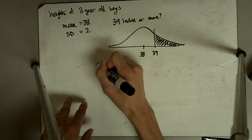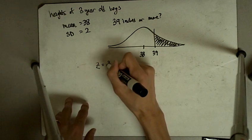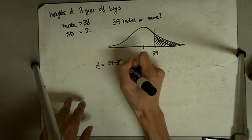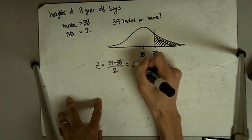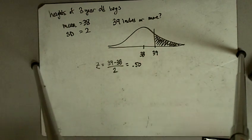So in this case, we find our z-score. Our z-score is going to be 39 minus 38, each standard deviation is 2, so we are half a standard deviation above the mean.